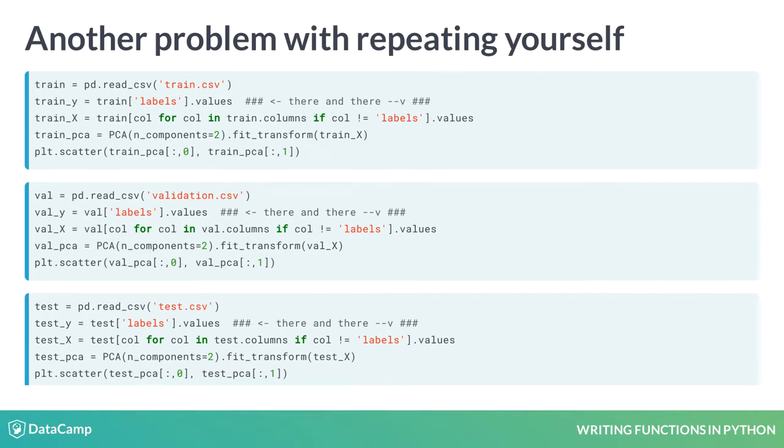Another problem with repeated code is that if you want to change something, you often have to do it in multiple places. For instance, if we realized that our CSVs used the column name label instead of labels, we would have to change our code in six places.